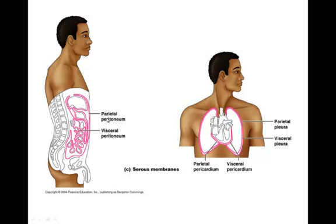Here we have our parietal peritoneum. Parietal names the body cavity lining, and visceral refers to the organ. The peritoneum refers to the abdominal cavity. Parietal pleura means we're lining the cavity housing the lungs. Visceral pleura means we're covering the lung itself. The visceral pericardium means we're covering the heart, and the parietal pericardium means we're lining the cavity in which the heart lies. These serous membranes reduce friction.